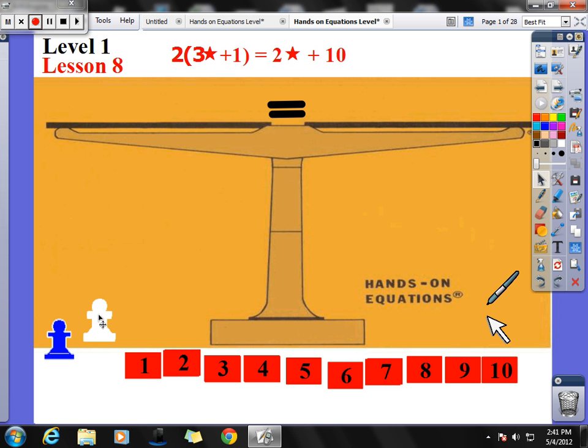What I want to do is get 3 star plus 1, but remember, I want it 2 times. So I'm taking this parenthesis here, and I'm doubling what I see on the inside of it. So instead of 3 star, I now have 6 star.